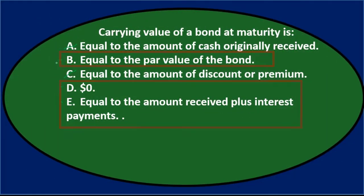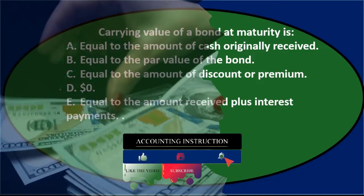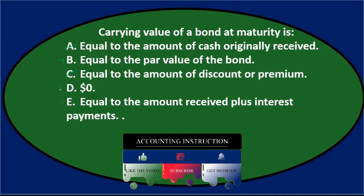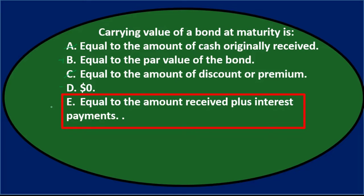So between options B, D, and E: B says equal to the par value of the bond — that's the face amount, which is exactly what you're left with at maturity. D says zero, but before you pay it off you still have the face amount outstanding — zero only applies after payment. E says equal to the amount received plus interest payments, but interest payments are already expensed and don't affect the bond balance sheet account. The correct answer is B — equal to the par value of the bond.